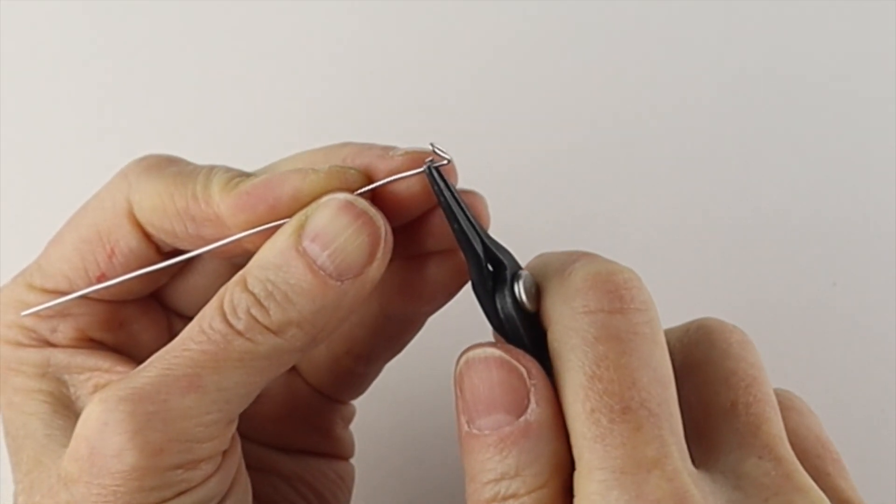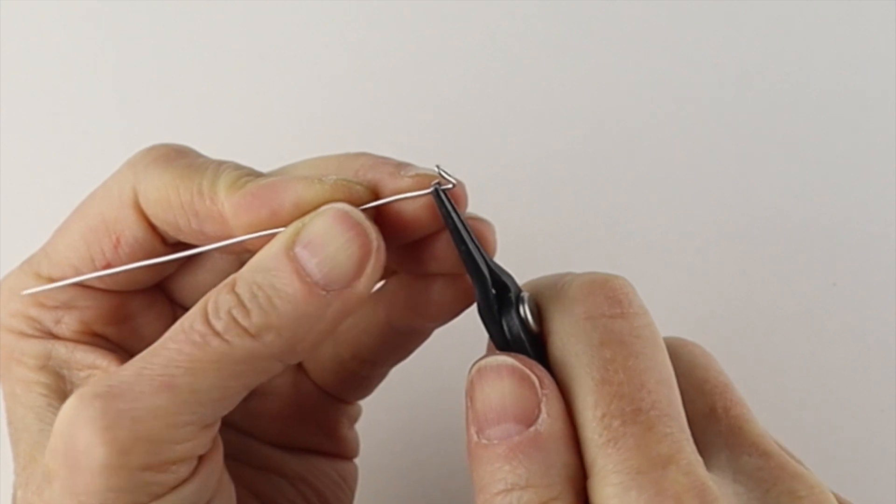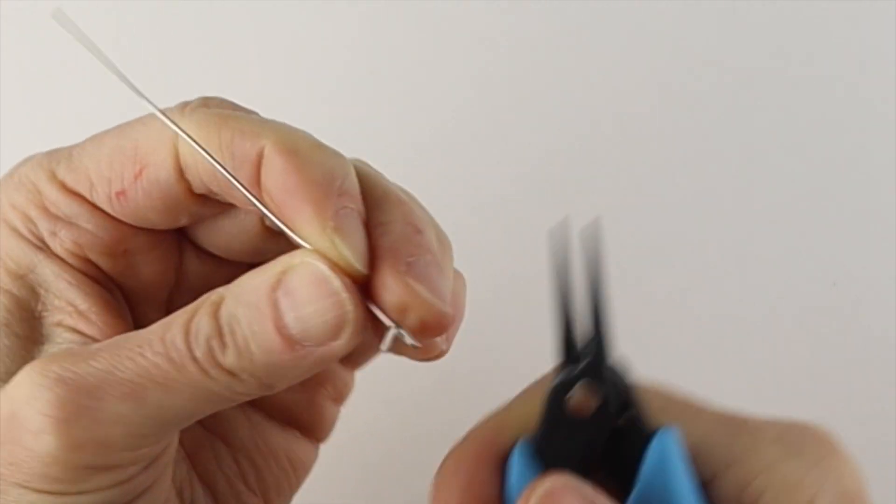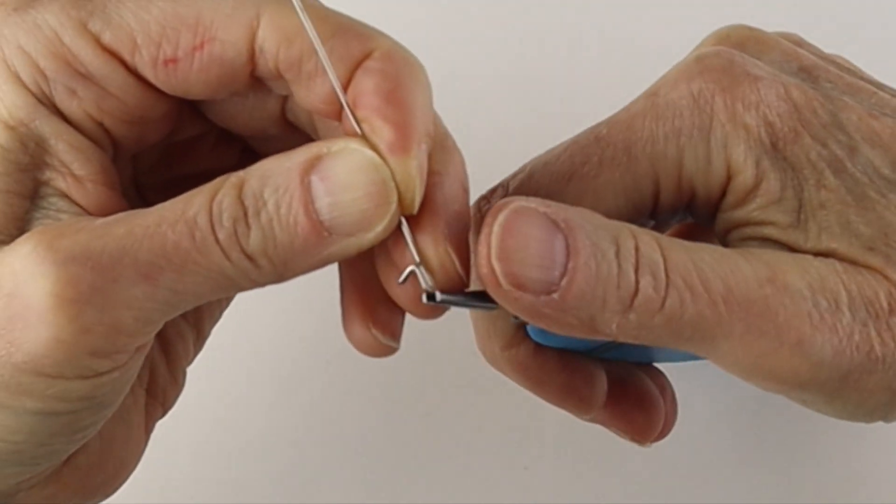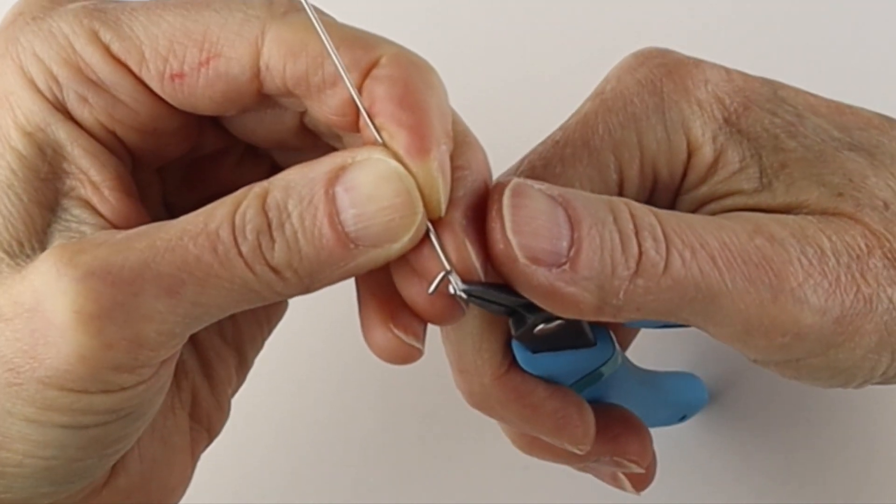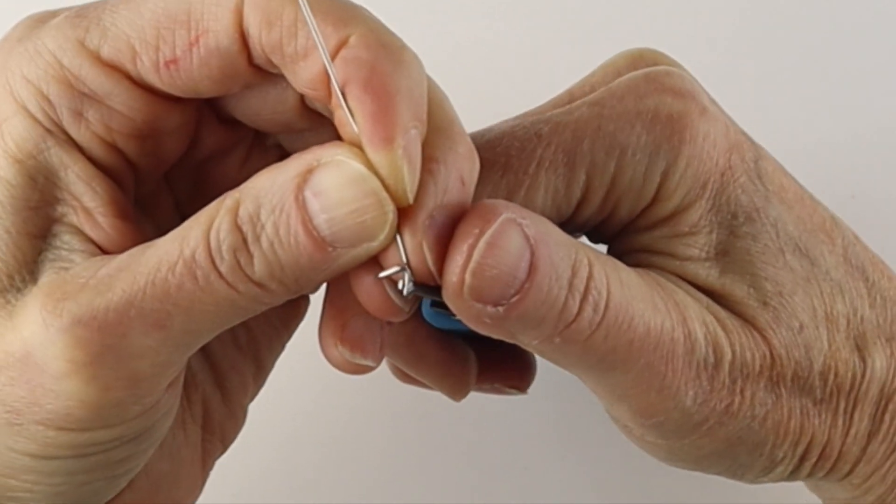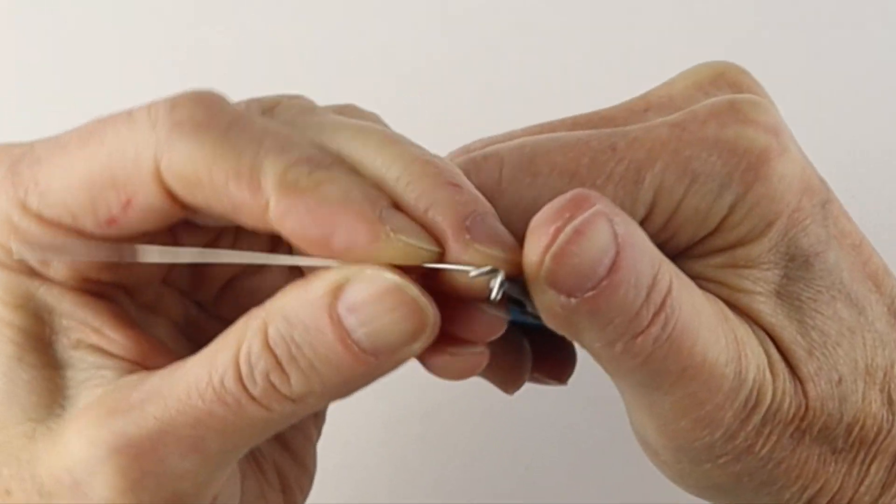And then we want to hold this wire, bend it to the back, give it a little pinch. And then hold this just below the center point of the arrow and bend it back.